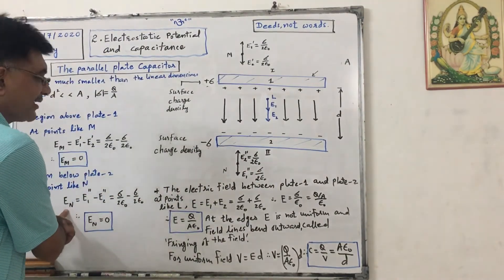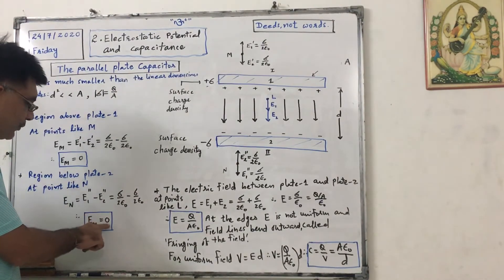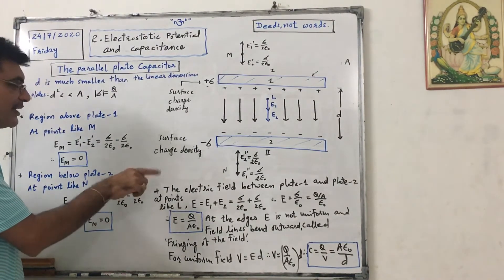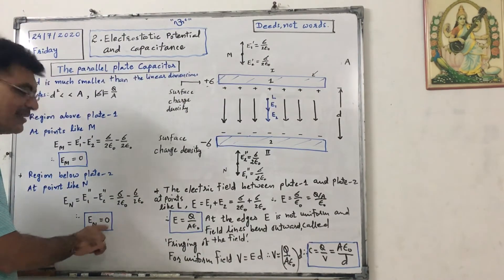So E at N. See, I have written here magnitude. So I have to put here E1 double dash minus E2 double dash, sigma upon two epsilon naught minus sigma upon two epsilon naught. So E at N is zero.